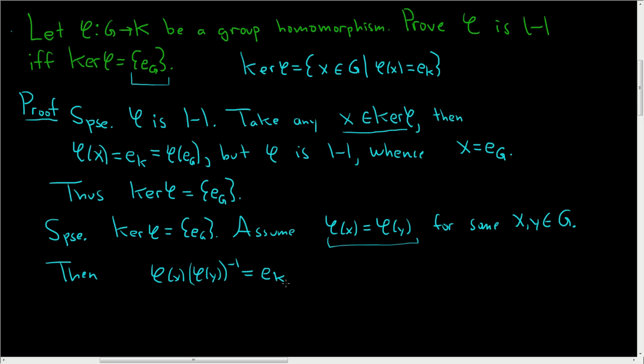φ is a group homomorphism, so we can rewrite this as φ(xy⁻¹) is equal to the identity element in K.